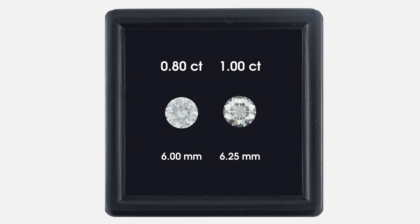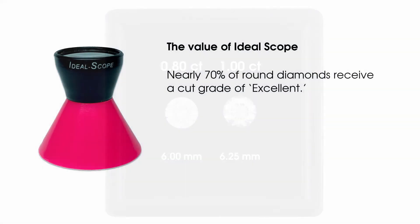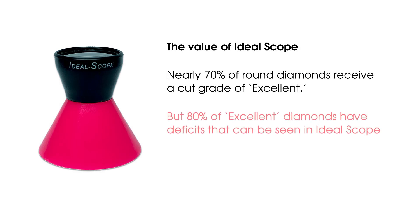Here's why this matters to diamond shoppers. Nearly 70% of all round diamonds receive a top cut grade of excellent, but 80% of excellent diamonds have performance deficits that can be seen in IdealScope.